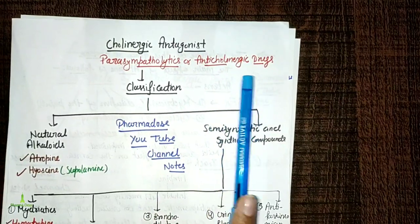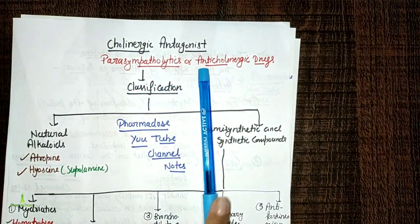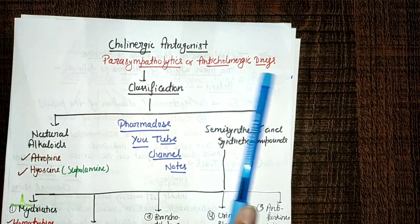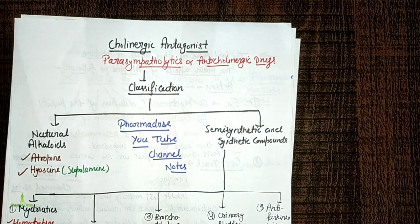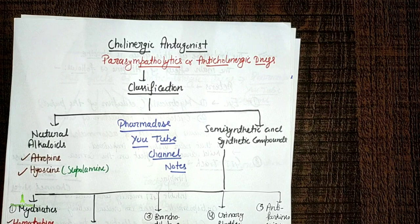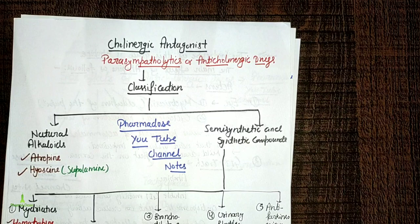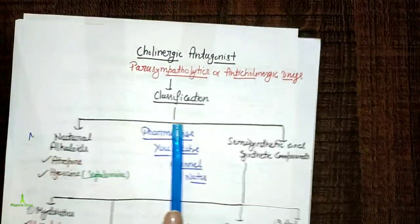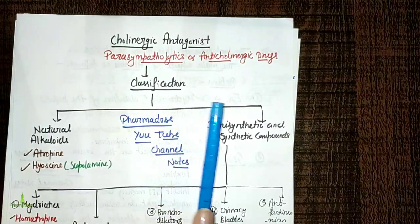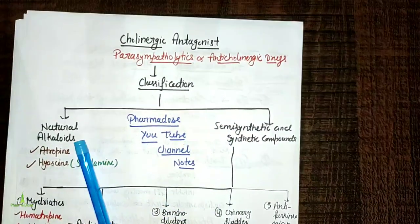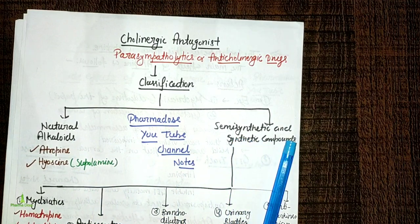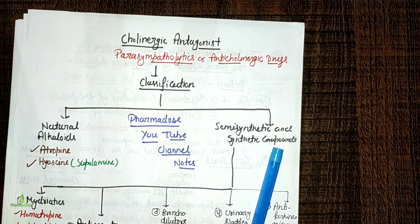Another name for cholinergic antagonist is parasympatholytics or anticholinergic drugs. Parasympathomimetic and cholinergic agonist another name is parasympathomimetic. The cholinergic antagonist drugs are classified as natural alkaloids, semi-synthetic, and synthetic compounds.